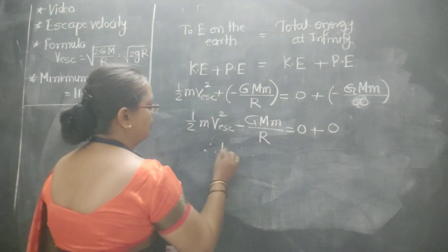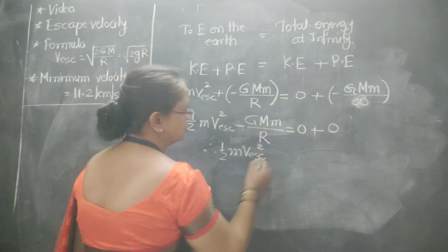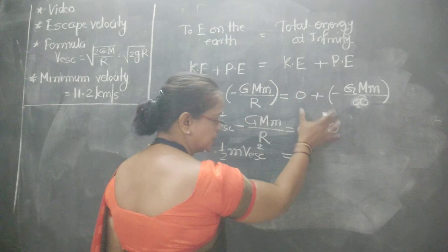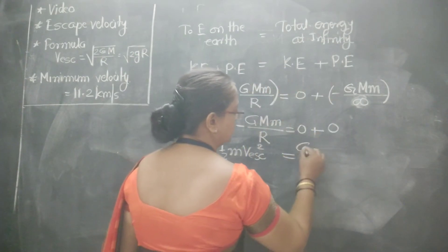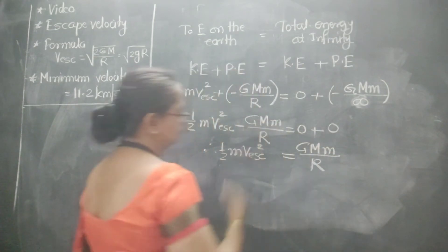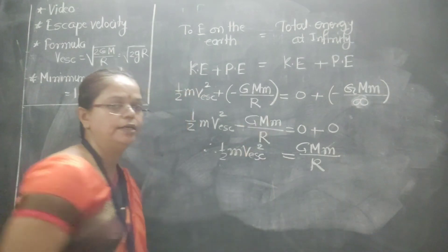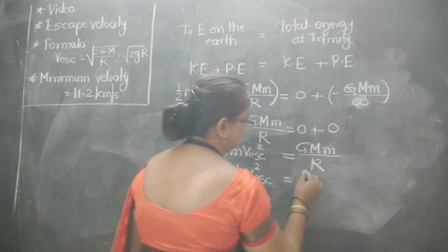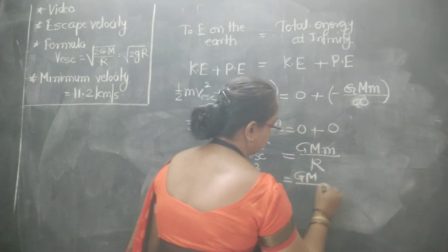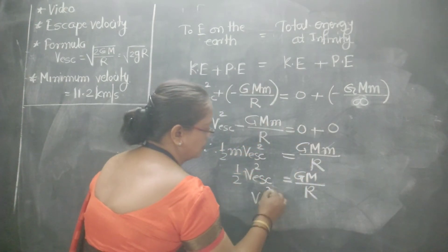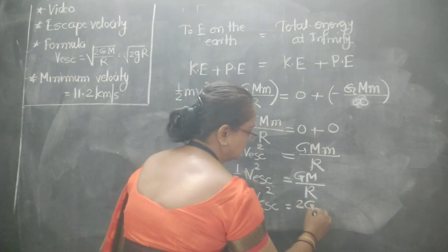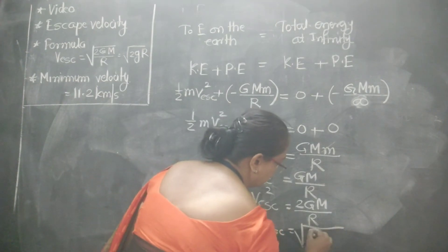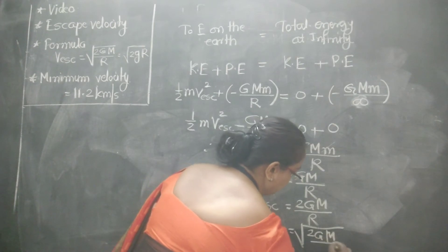Therefore: half mv_s squared minus GMm upon R equals zero. So half v_s squared equals GM upon R. Therefore v_s squared equals 2GM upon R, and therefore v_s equals square root of 2GM upon R.